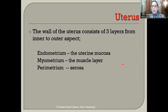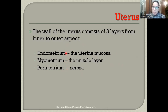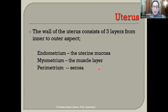The uterine wall has three layers from internal to external: the endometrium (uterine mucosa — epithelium and supporting tissue), the myometrium (smooth muscle layer), and the perimetrium (visceral peritoneum or serosa — a single layer of flattened cells).